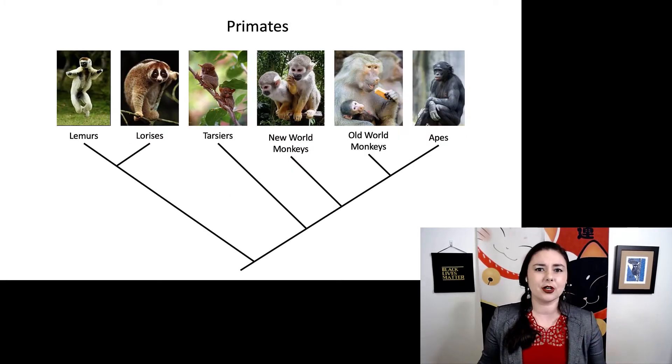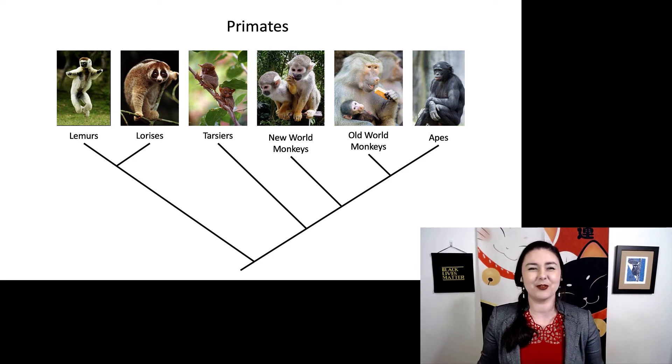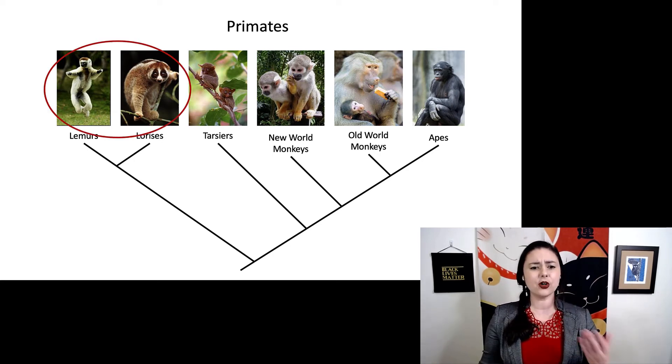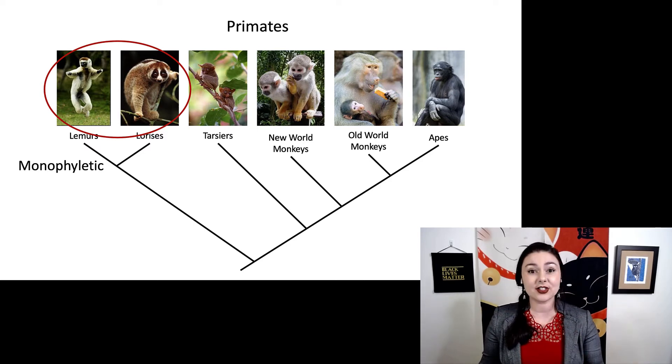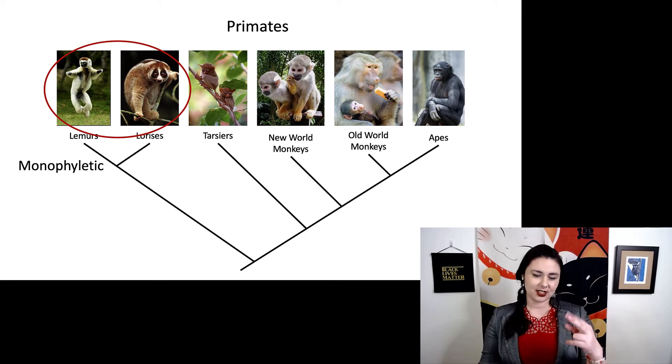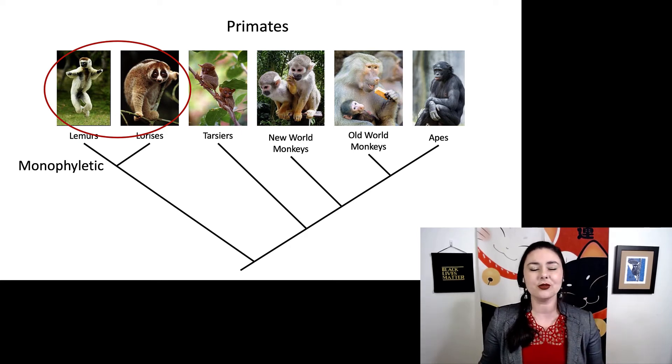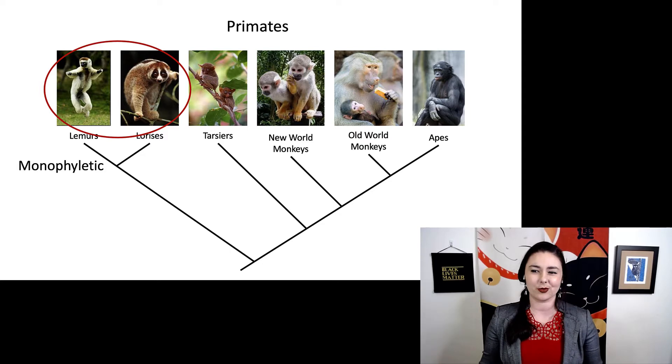But let's go back to our example here and let's see if we can pick out what type of group we're looking at. So if I circle lemurs and lorises, what type of group is this? Monophyletic, paraphyletic, or polyphyletic? If you guessed monophyletic, you would be correct. Because remember, we've taken an ancestor and all of its descendants. So all of these guys are more closely related. We could just snip it right in between the root and lemurs and lorises. And that is one entire group there.